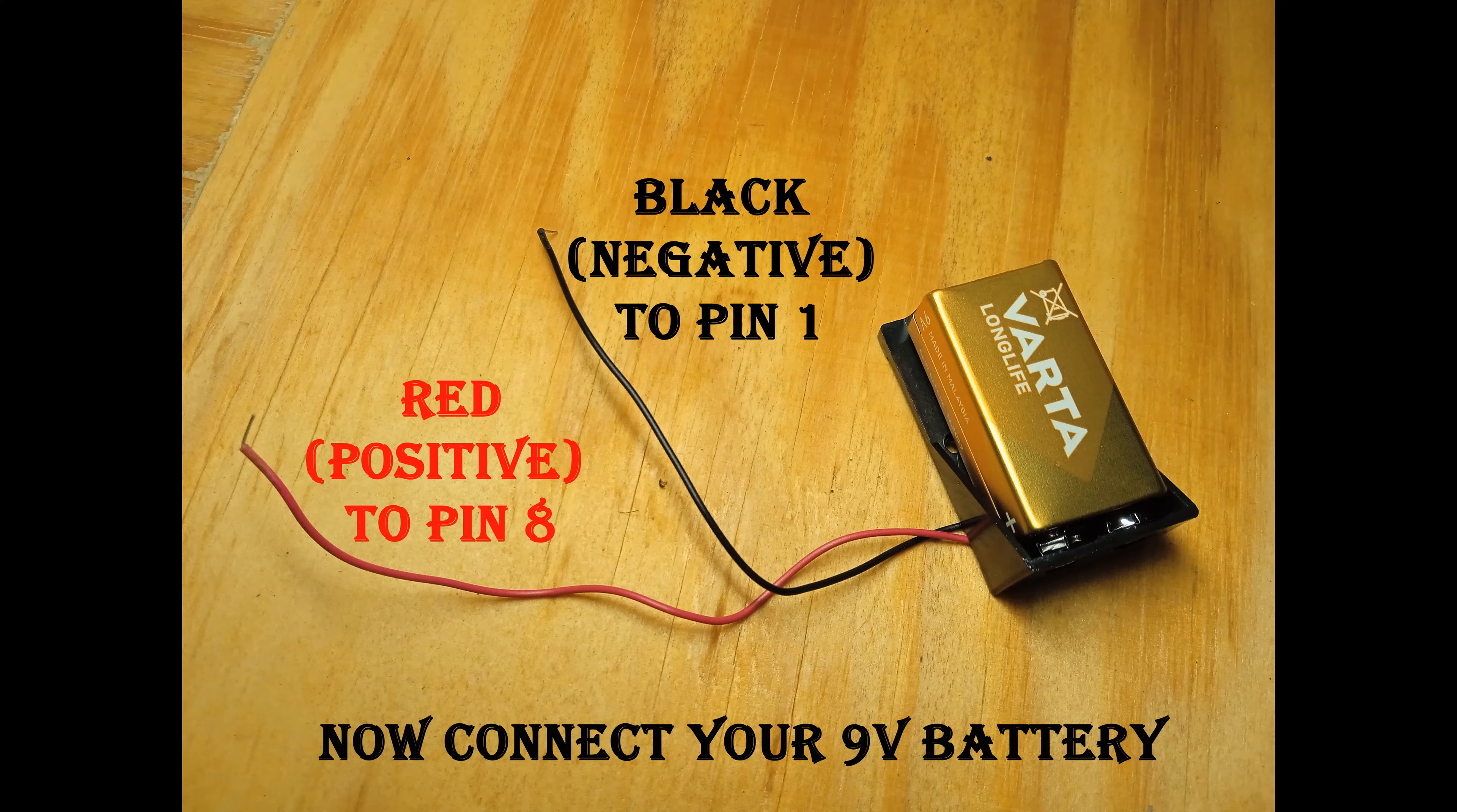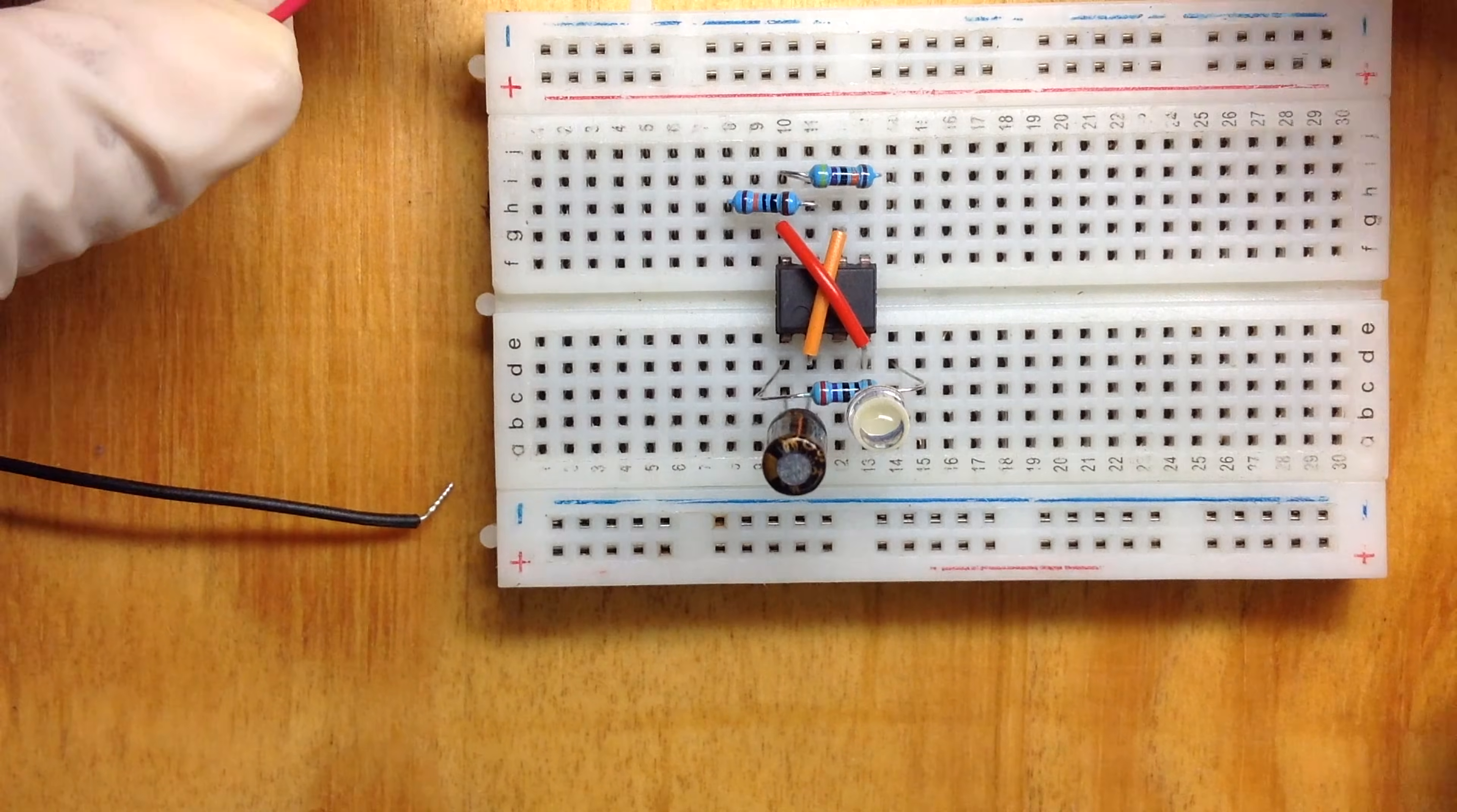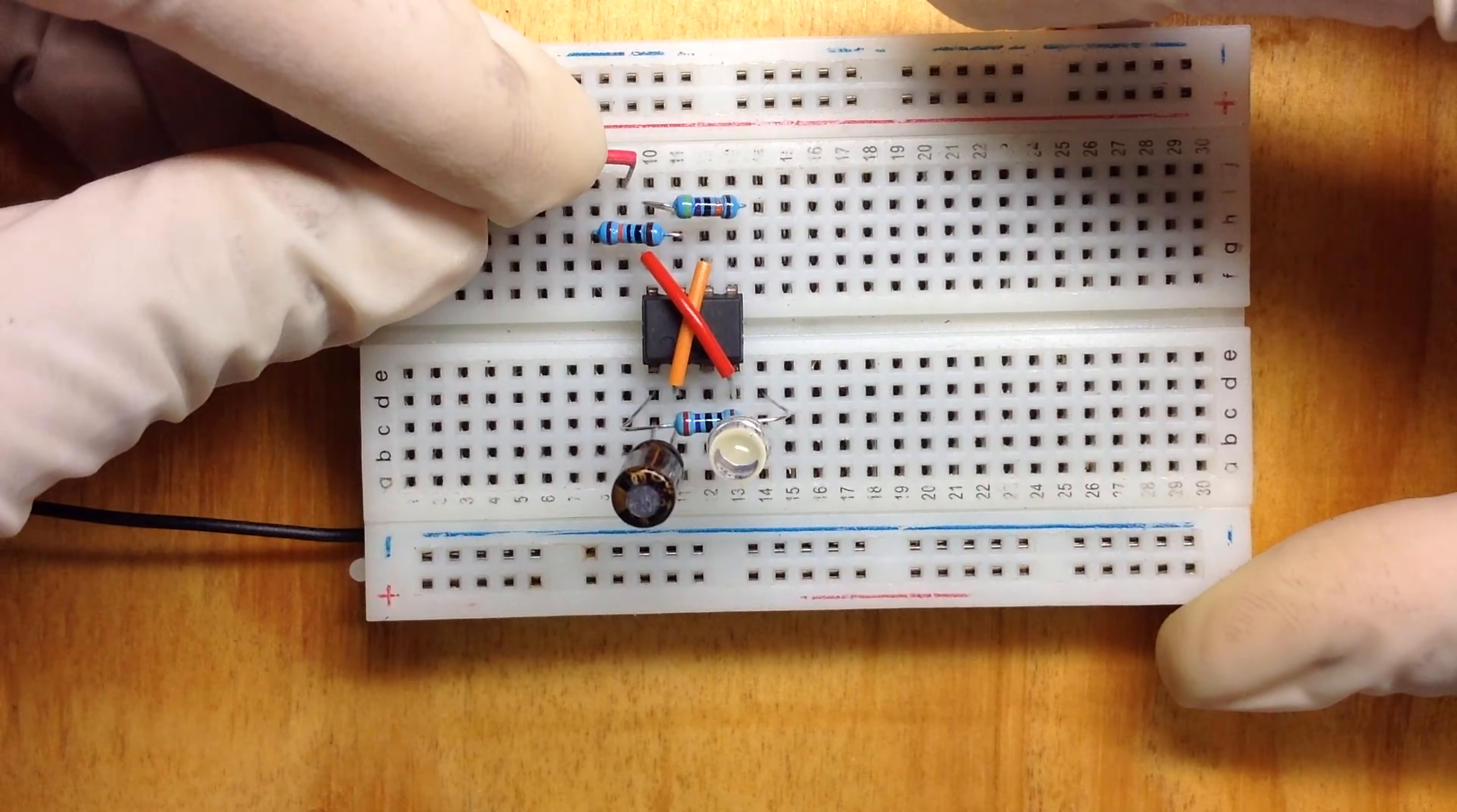Now take your power supply or your battery and connect the negative to pin 1 and then the positive to pin 8 of the IC.